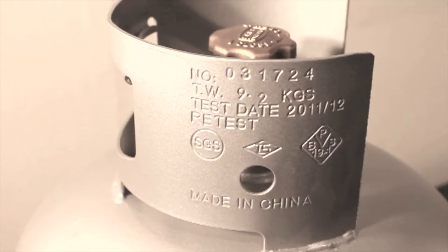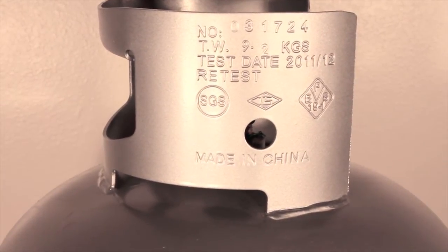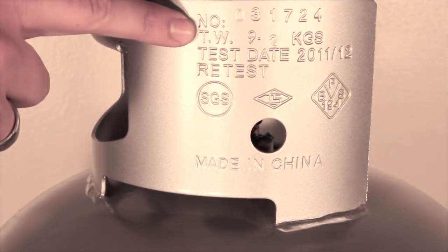Take the tare weight indicated on the cylinder neck as TW. The tare weight is the weight of an empty gas cylinder.